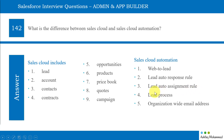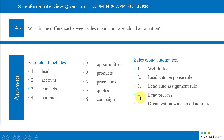Then we have lead auto assignments. If a lead comes into our company, someone has to take care of that lead. We can automatically assign leads to the sales staff using lead auto assignment rules. Lead process: every company has their own process — what should happen when the lead comes in, until the lead becomes a customer. How we configure this process is part of the lead process. And organization-wide email is nothing but a default email which we can send whenever we want to send an email to customers.